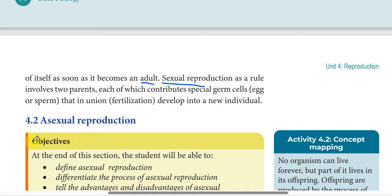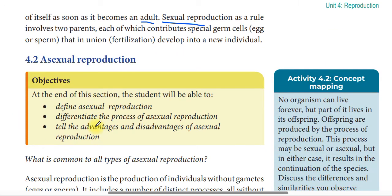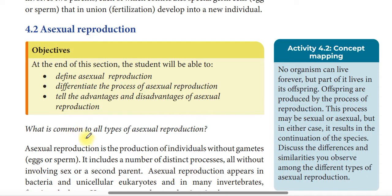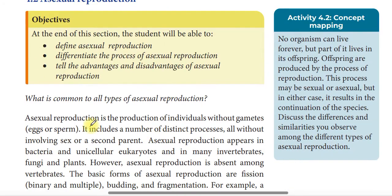The second topic is asexual reproduction. There are two types of reproduction. Asexual reproduction is the production of individuals without gametes — that means without eggs or sperms.